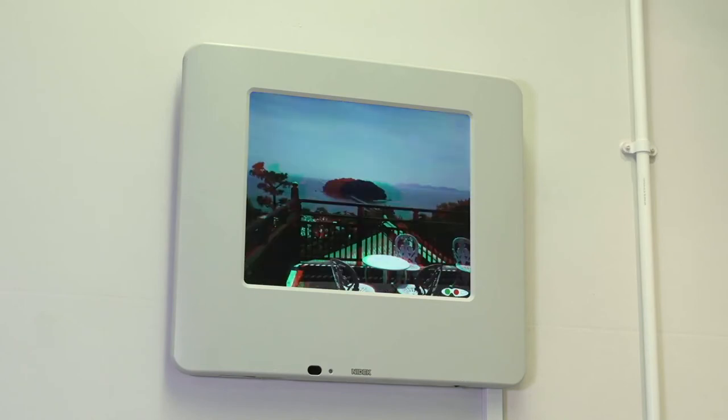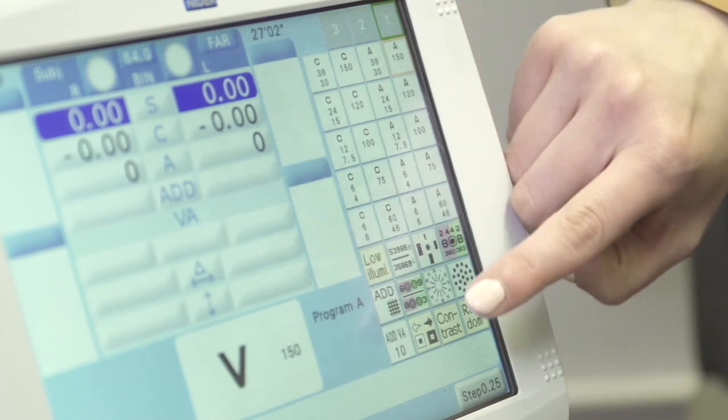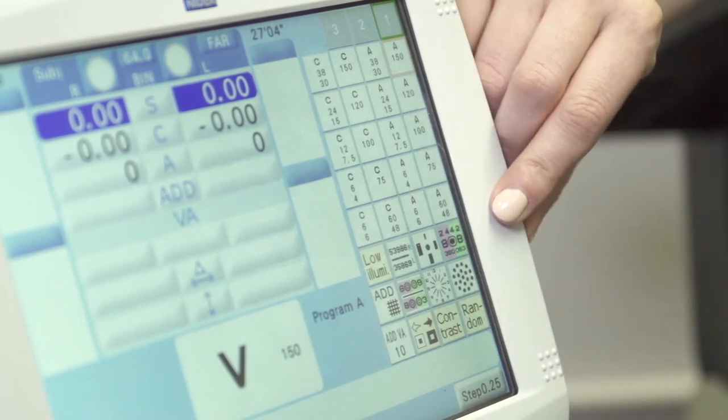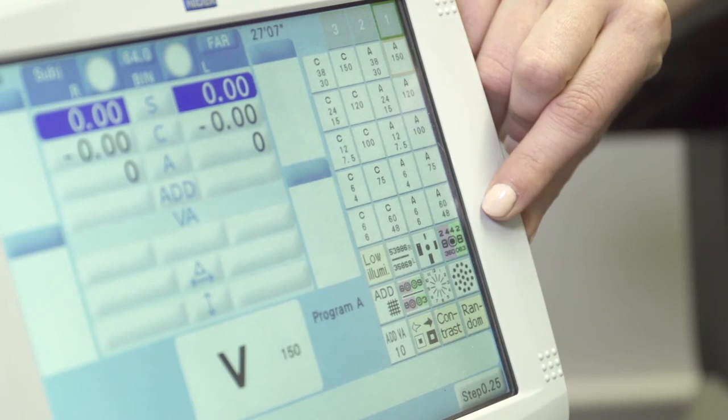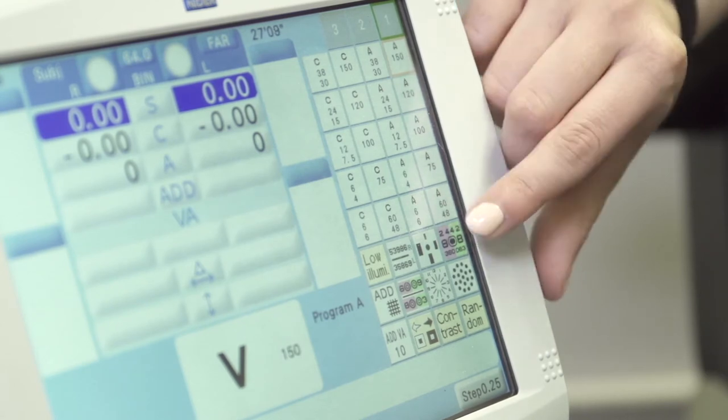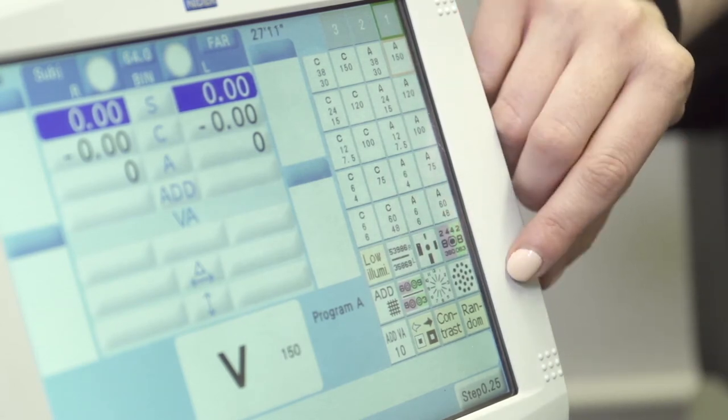Some of which have stereopsis demonstrating capability. Back on the first two pages, the bottom half of the screen here demonstrates the essential auxiliary testing such as duochrome and cross cylinder, as well as our visual function testing such as our contrast and our low illumination.